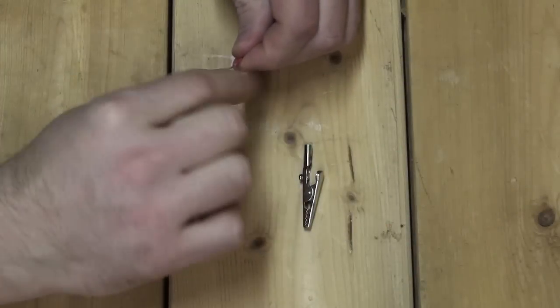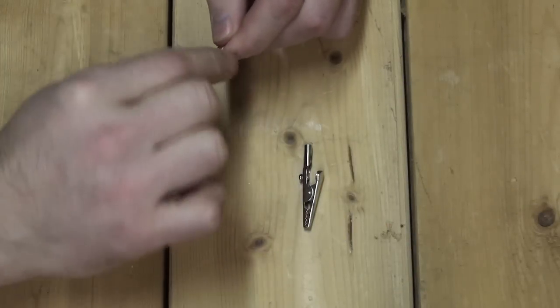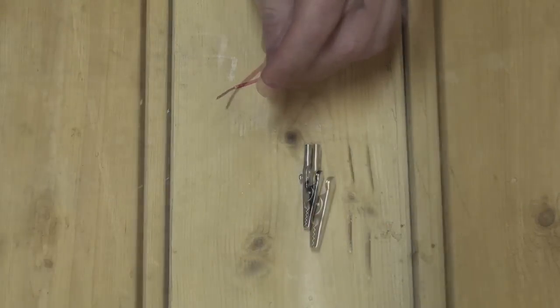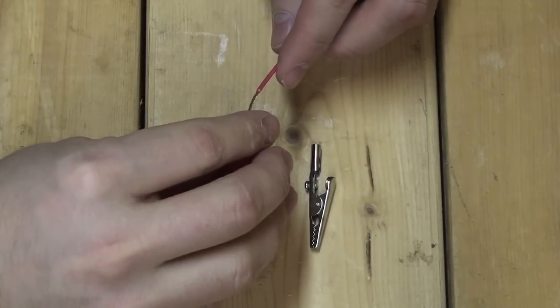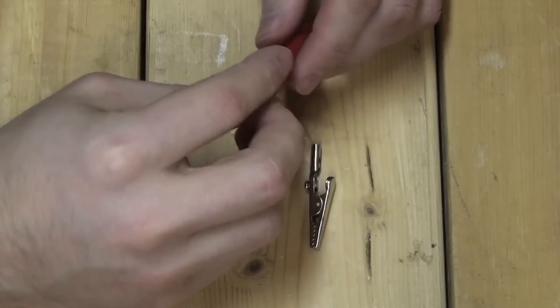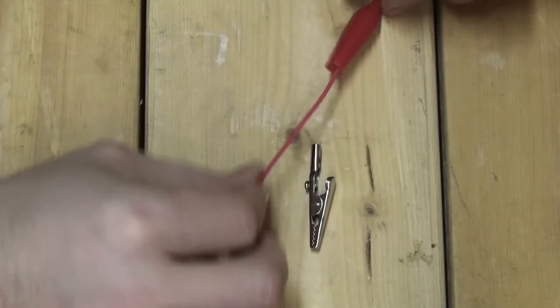You will need to start by stripping the end on one lead and ensuring that all the stranded fibers are wound tightly together. Then, if provided, slide the rubber insulator onto the connection wire before attaching the alligator clip.